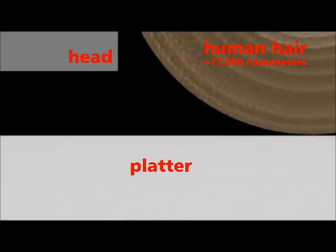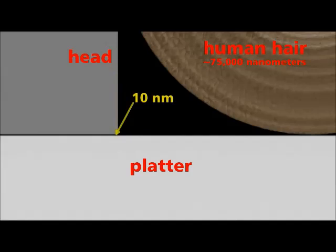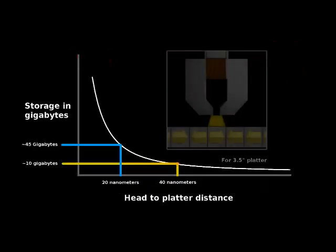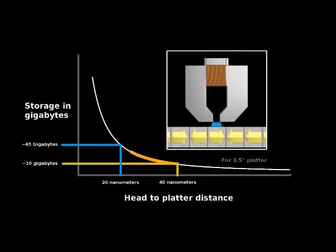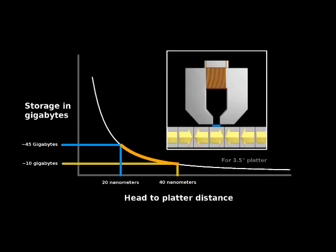The head gets astonishingly close to the disk surface. 100 nanometers in older drives, but today under 10 nanometers in the newest ones. As the head gets closer to the disk, its magnetic field covers less area, allowing for more sectors of information to be packed onto the disk surface.